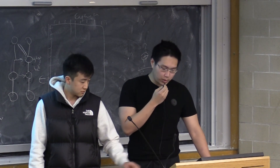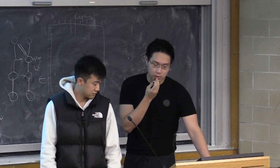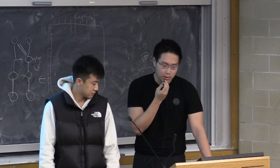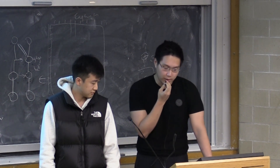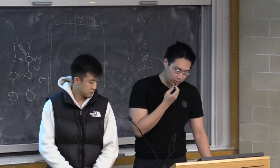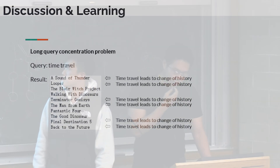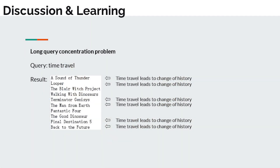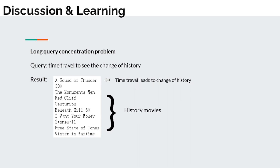One potential problem with our model is handling long, complex queries, which may lead to a concentration bias problem. For example, when we searched for time travel movies, the top ten results included six movies related to time travel. However, when we extended the query to 'time travel to see the change of history,' most of the returned movies were history movies except the first one.